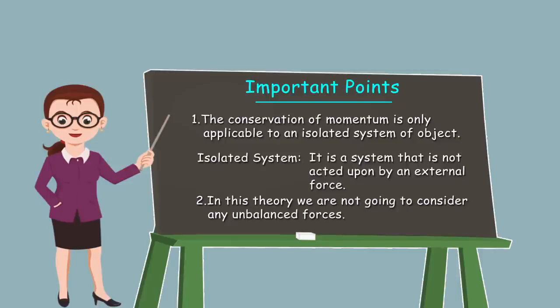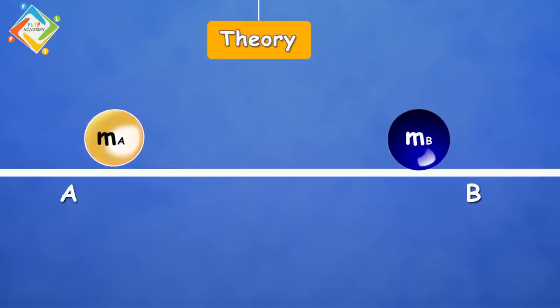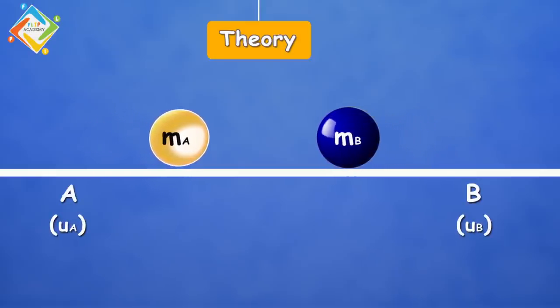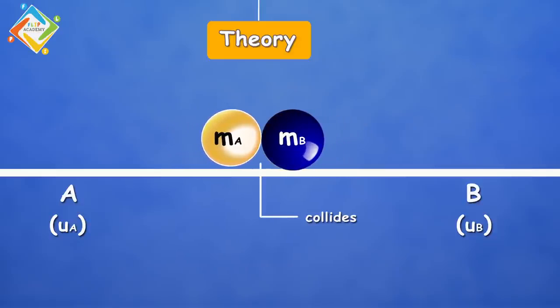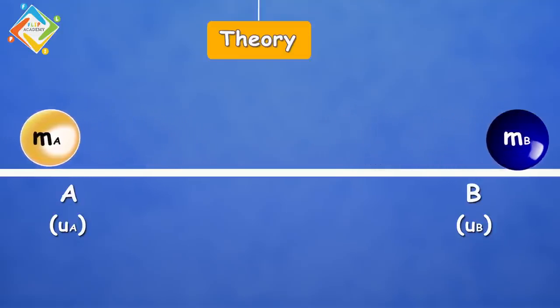Now let's start with the theory. Suppose there are two balls A and B. Ball A has mass mA and ball B has mass mB. Both balls are traveling along a straight line at initial velocities uA and uB such that ball A collides with ball B. During collision, ball A exerts force fA on ball B, and ball B exerts force fB on ball A. After collision, the two balls move with final velocities vA and vB.